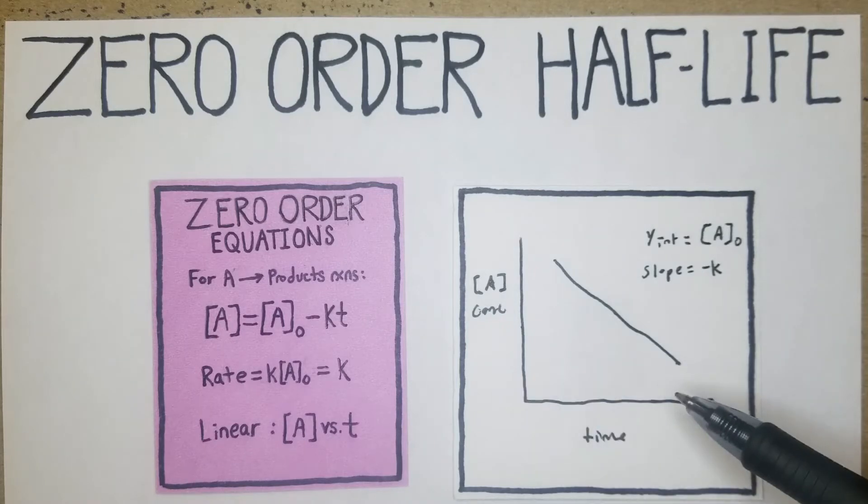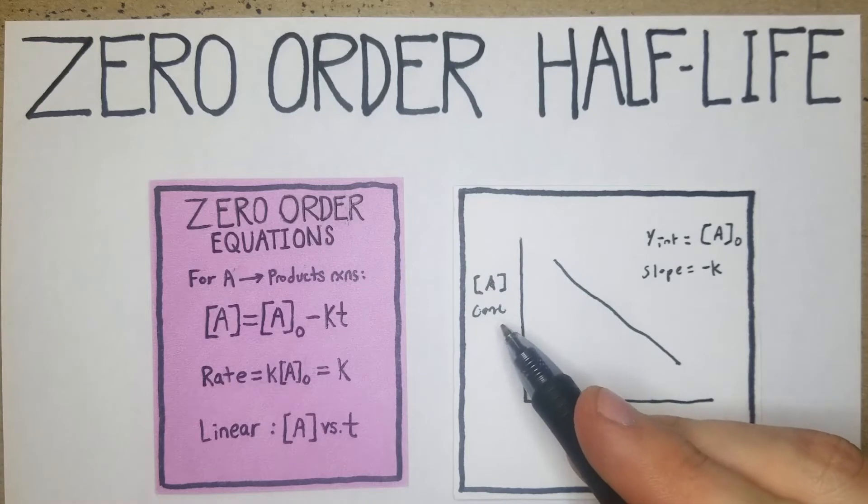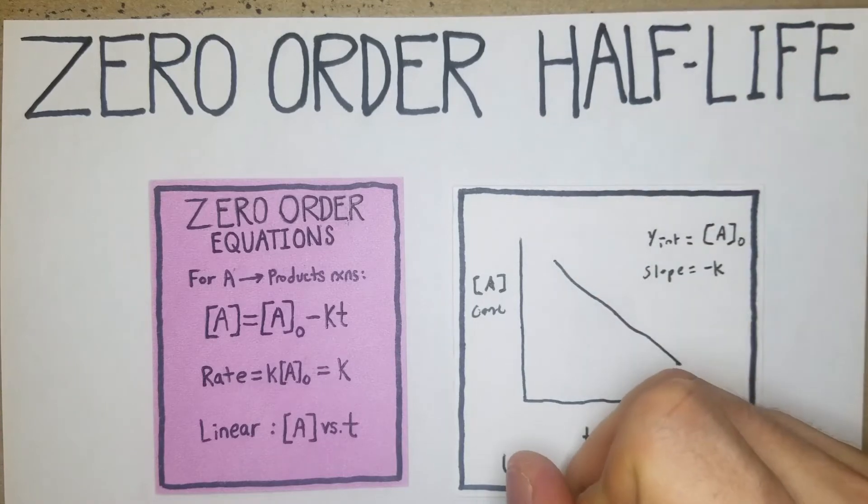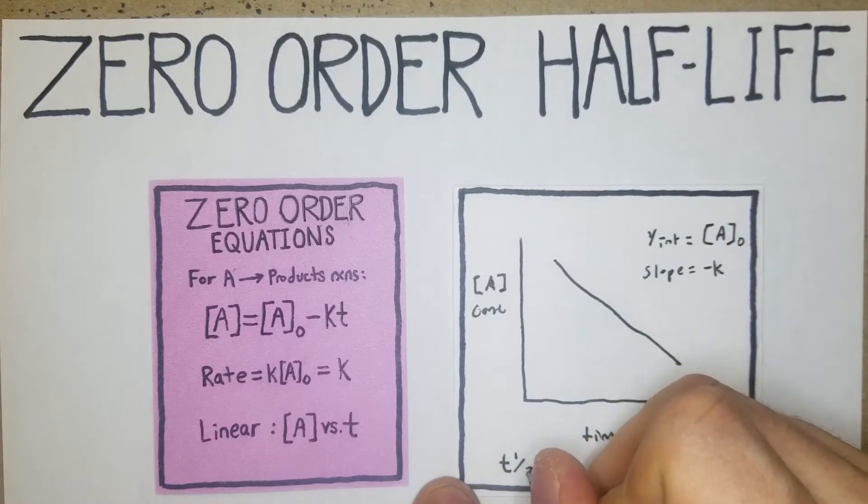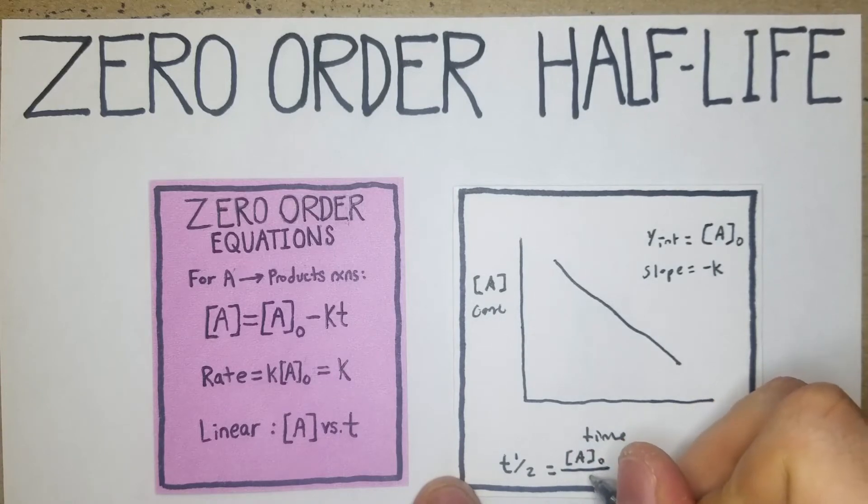Essentially it looks pretty straightforward and it really is. In the next two videos it's going to be first order and then second order, and in those cases they're not going to have the concentration of A on the y-axis like this one does. So it's something good to remember. And then for half-life it's going to be t₁/₂ equals A₀ over 2K.